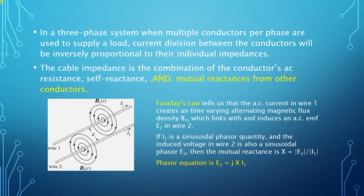When there are multiple paths between a source and a load, the currents will divide between the paths such that the current in each path is inversely proportional to the impedance of the path. Simple circuit analysis tells us this. When cables are arranged in parallel supplying a load, there will be a mutual reactance between the phases, and this mutual reactance increases as the distance between the conductors gets smaller. The AC voltage drop in one cable conductor due to the AC current in a second conductor increases with the current in the second circuit — this is basically a voltage induced by transformer action, i.e. it is an example of Faraday's law.